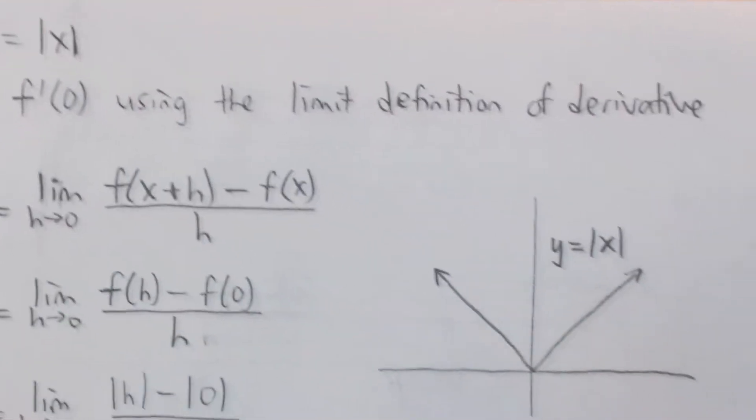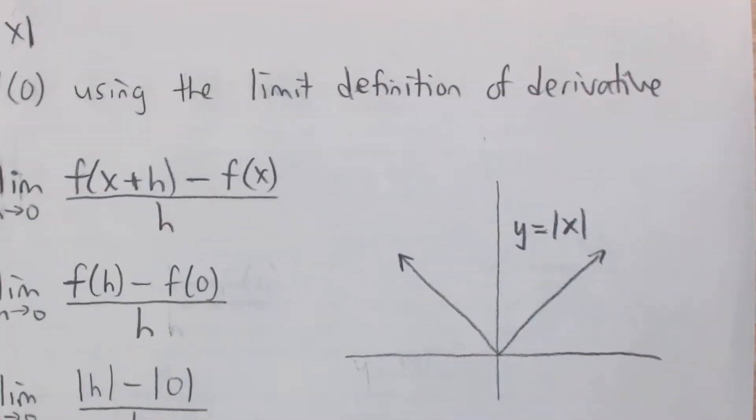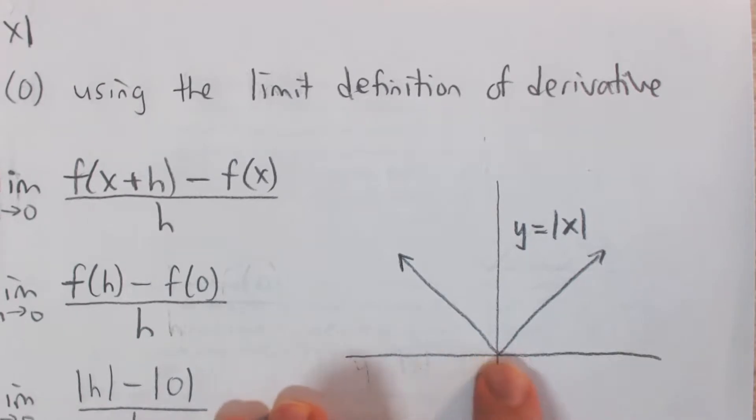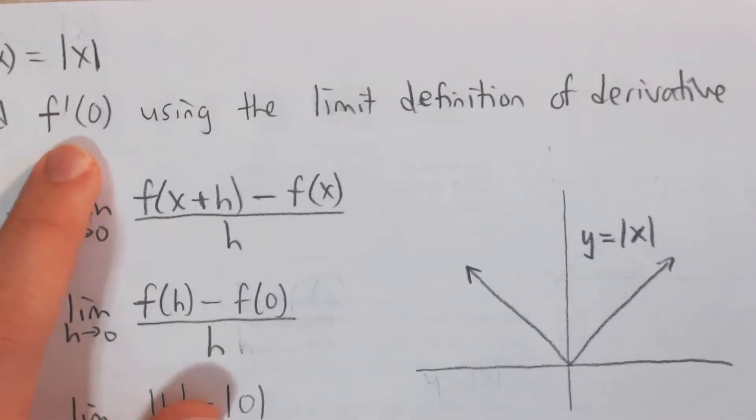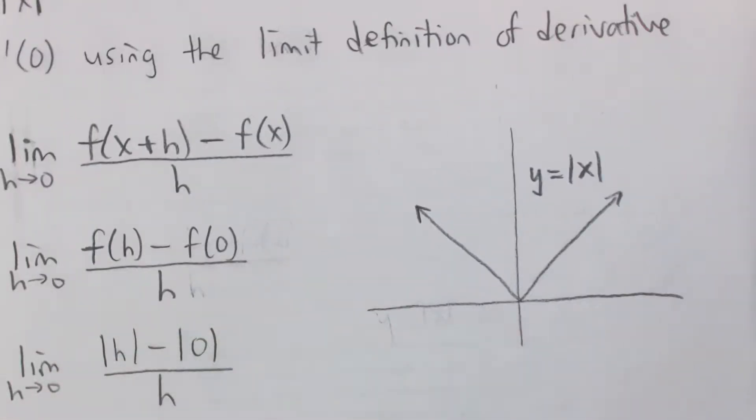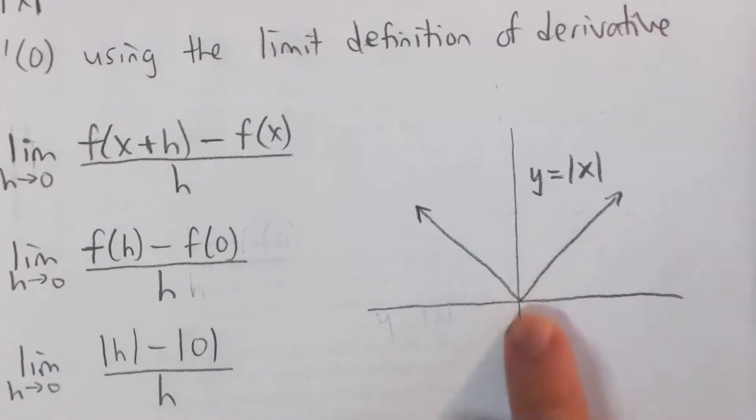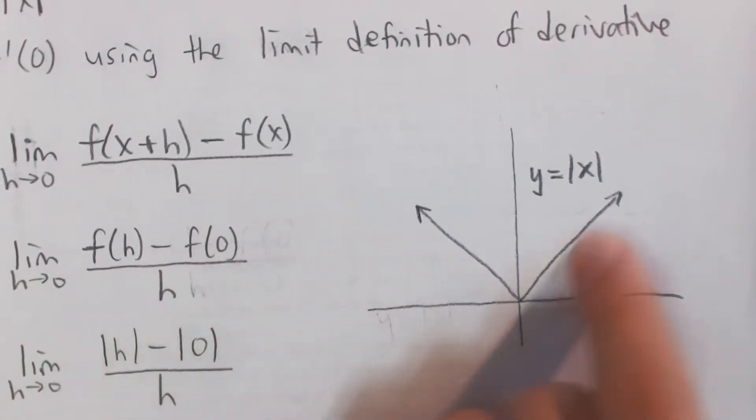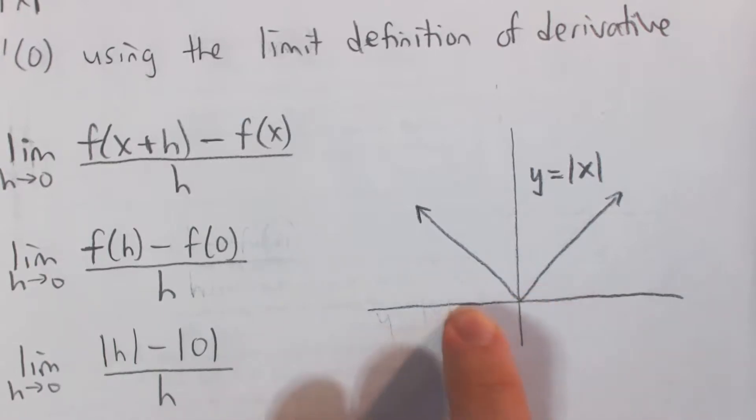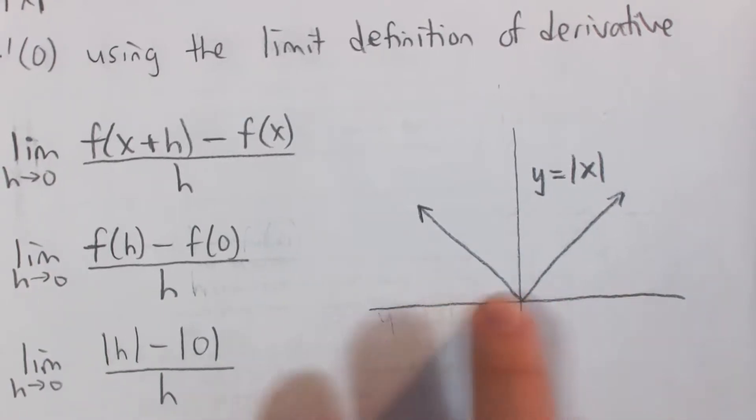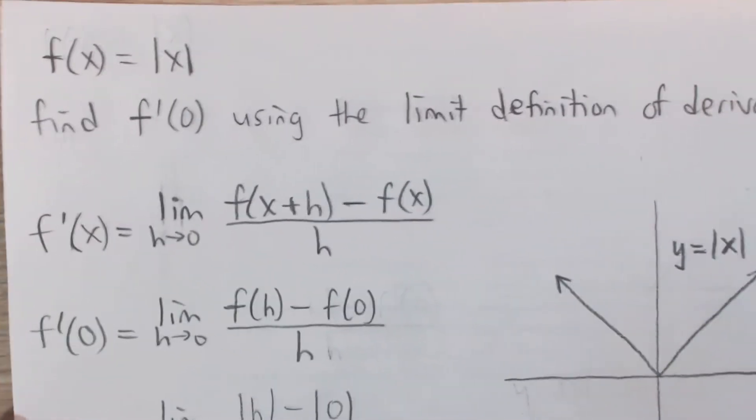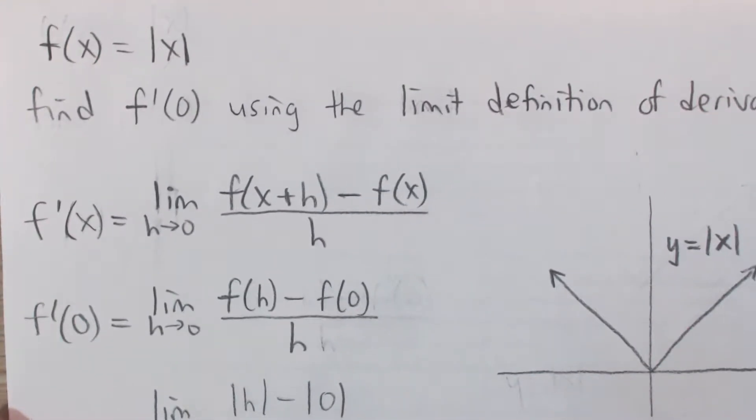If we take a look intuitively at the graph of y equals absolute value of x, it's unclear what the slope is. The derivative at 0 is the slope of a tangent line at 0. What is the slope at 0? It's unclear because on the left it's negative 1, on the right it's positive 1, or even if you didn't know that, it's just negative slope on the left and positive slope on the right. So at 0, maybe the slope is 0, maybe it's negative or positive. It's kind of unclear, but we can figure this out using the limit definition of derivative.